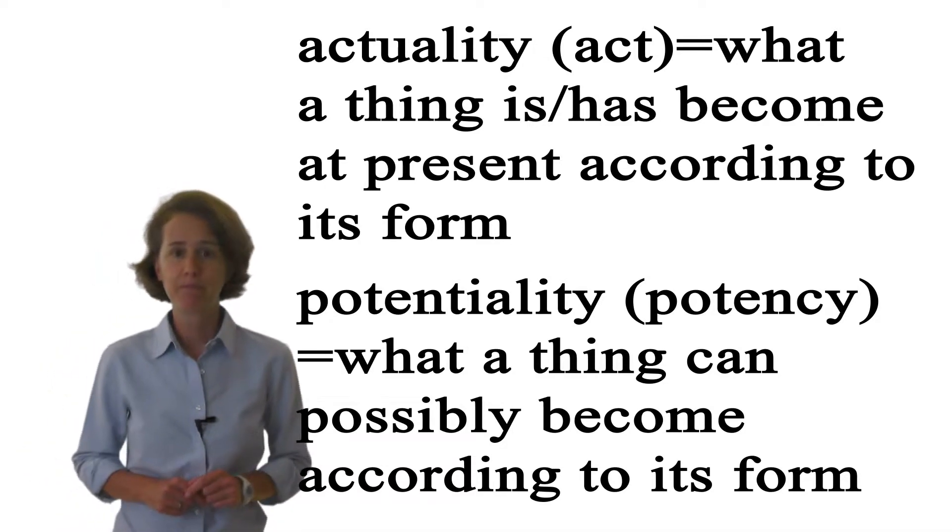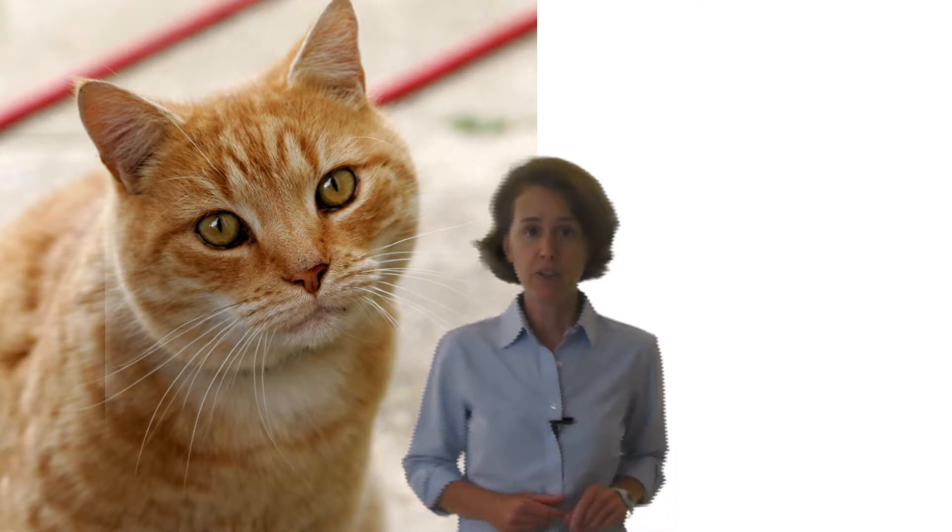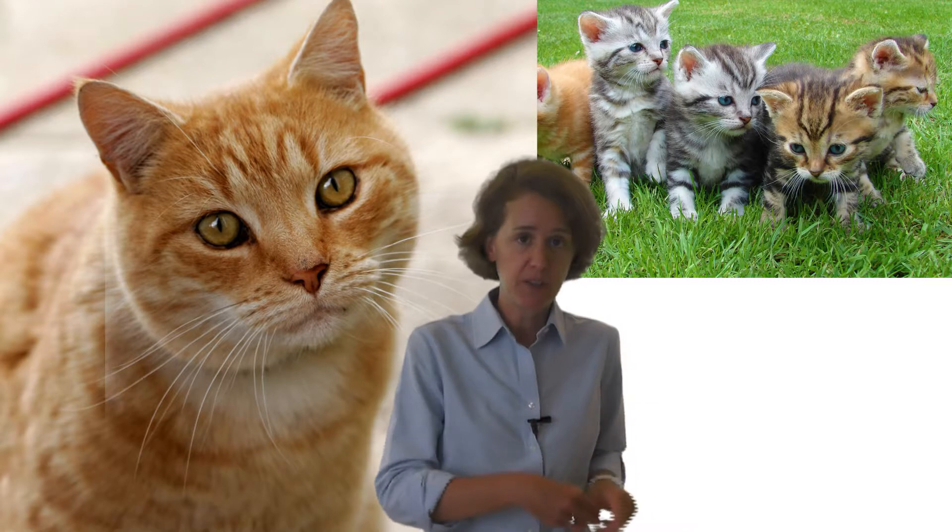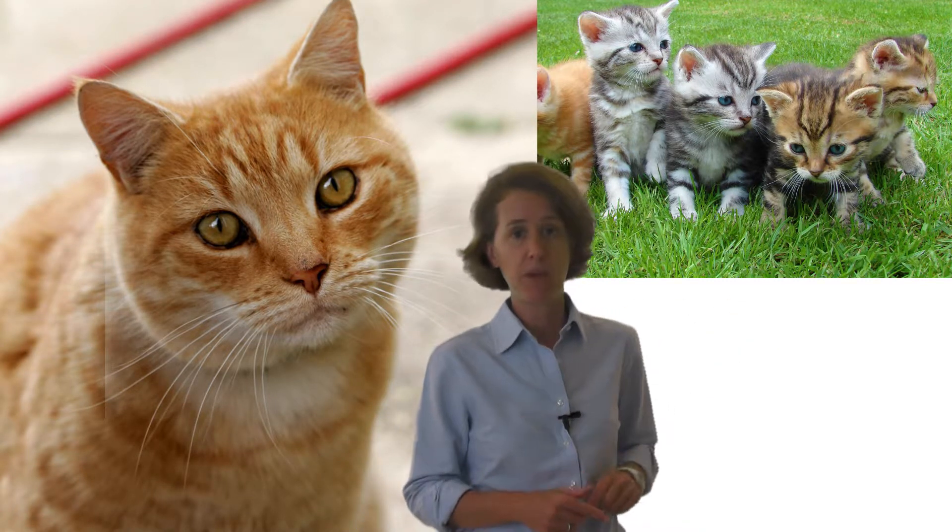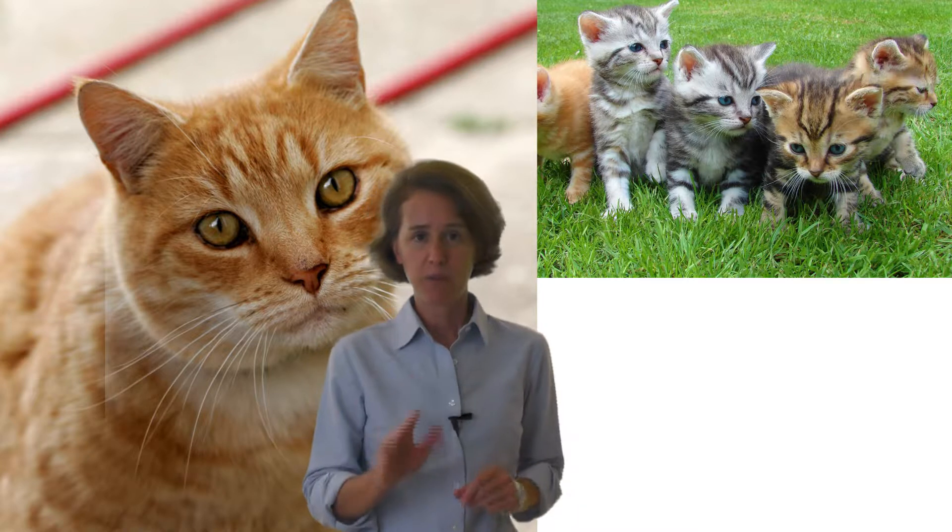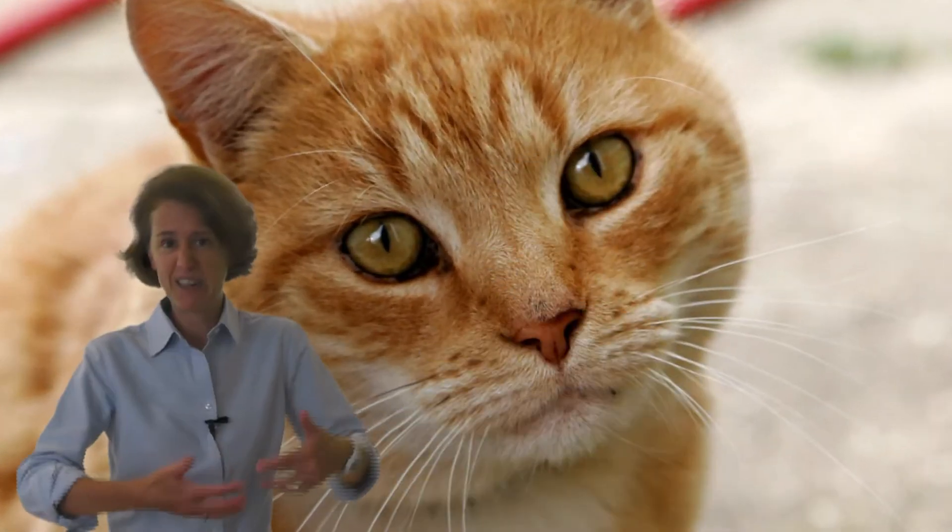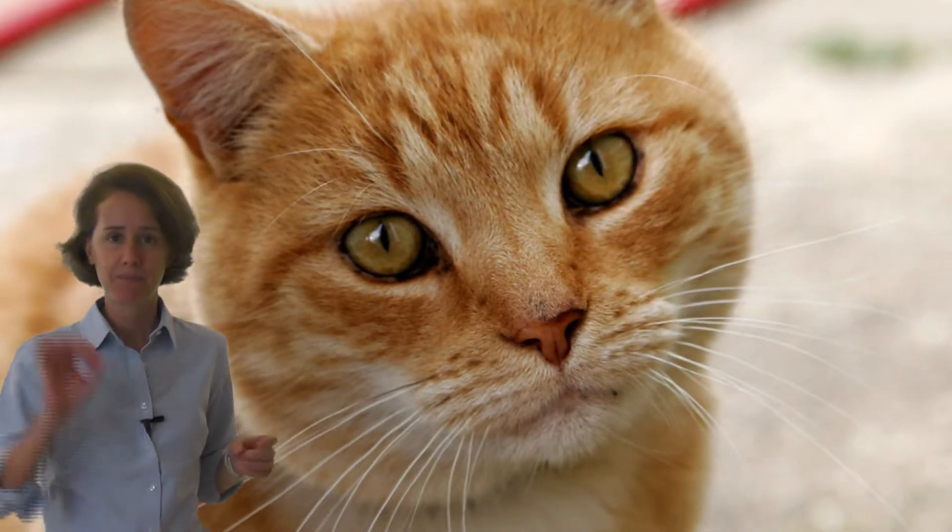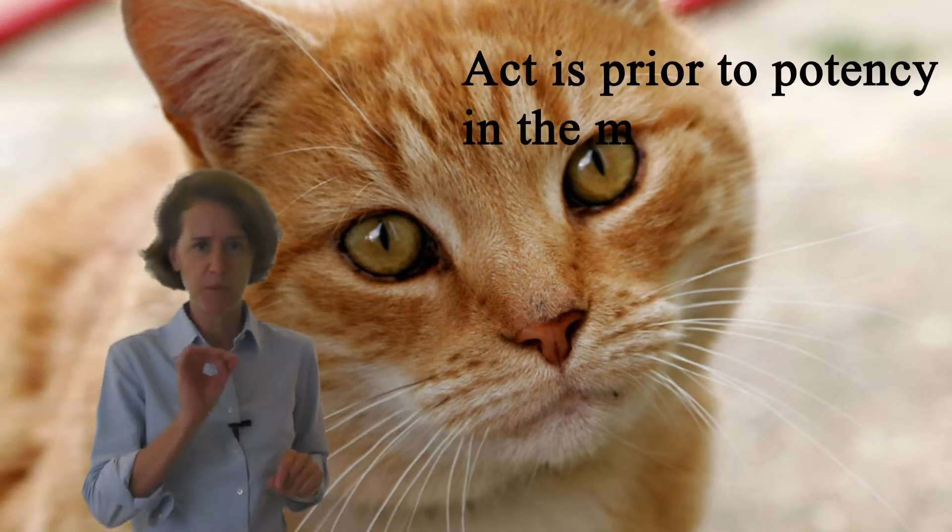Let's give an example, an everyday house cat. She was once herself a kitten, but now is fully actualized as a cat. Now she has a litter of kittens who are also potentially cats. If all goes well, the kittens will grow and develop and someday achieve full cathood. But here's the thing. In order for us to be able to look at these kittens and understand what they are, we have to be able to understand what a full-fledged, fully actualized cat is. Act is prior to potency in the mind.